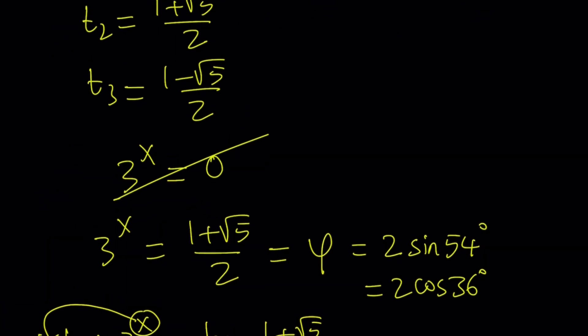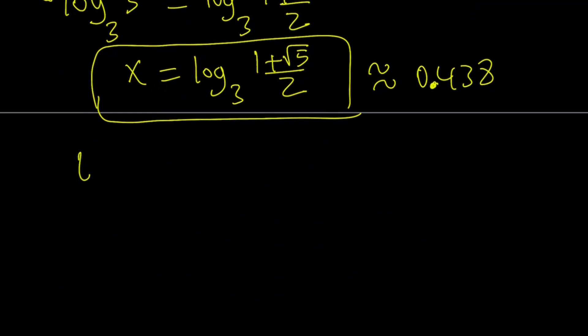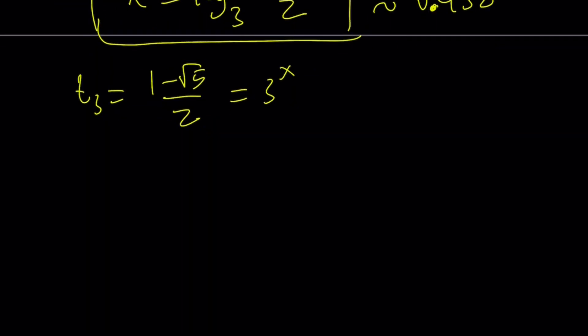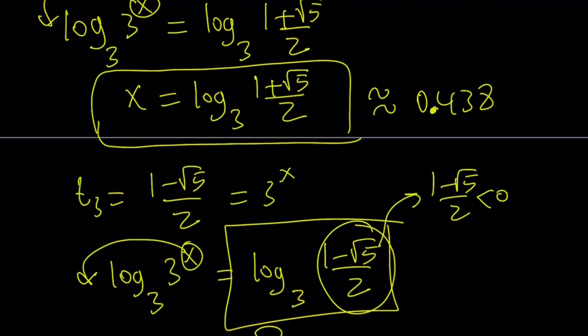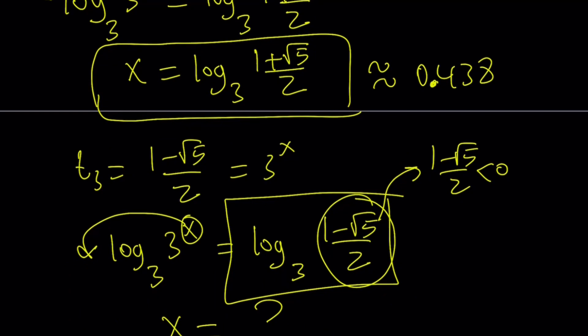Let's consider t3 now. And remember t sub 3 was 1 minus root 5 over 2. And that is equal to 3 to the power x. So 3 to the power x equals 1 minus root 5 over 2. Let's log both sides again. And we should be getting a solution from here. But unfortunately we get an x on the left hand side. But the right hand side is kind of problematic because 1 minus root 5 over 2 is less than 0. And if you have a negative number you can't really log it in the real world. So there is no real solution from here. So the only solution happens to be x equals log of the golden ratio with base 3.